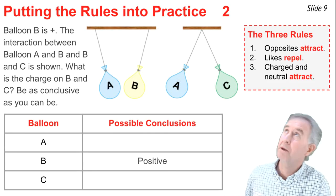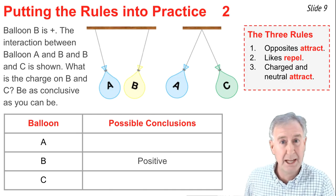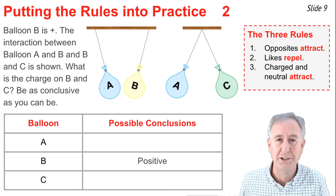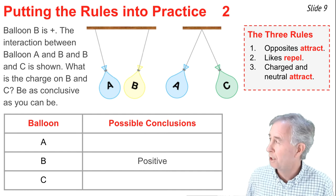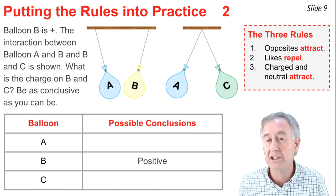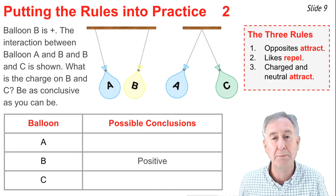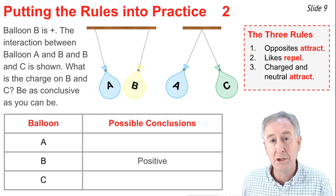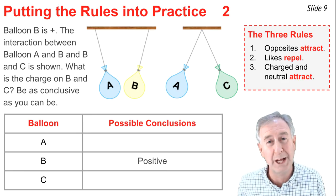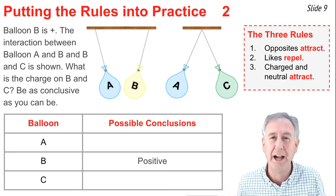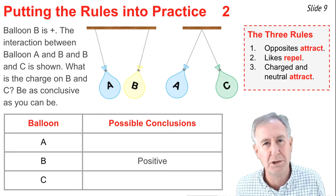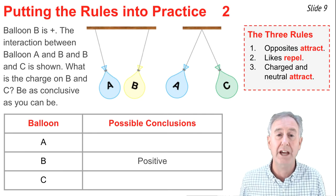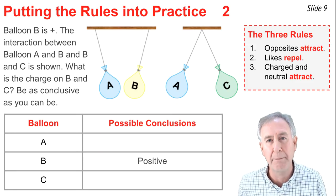Here is a similar question where balloon A has two interactions. It interacts with the positively charged balloon B and the interaction is attractive, which temporarily leads us to conclude balloon A is either negative or neutral. But then we observe balloon A repelling another object. There is no way a neutral object could repel another object — neutral objects only attract. So we can rule out the possibility that balloon A is neutral. It must be charged the opposite of balloon B — balloon A must be negative.